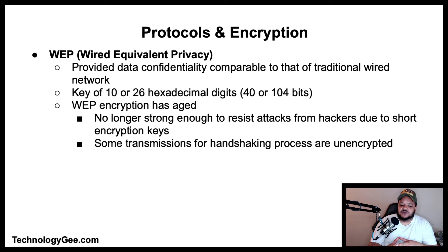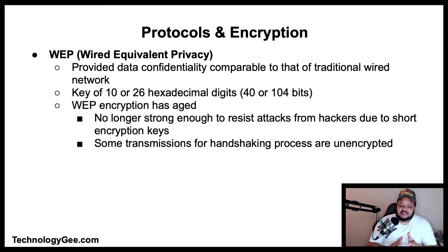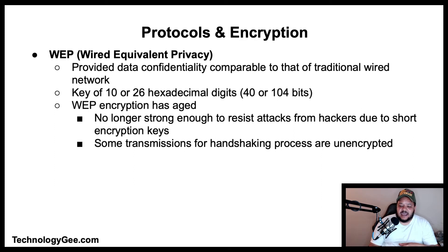The first wireless encryption standard is WEP, or Wired Equivalent Privacy. This is a security algorithm for the IEEE 802.11 wireless network. Its intention was to provide data confidentiality comparable to that of a traditional wired network. WEP is recognizable by its key of 10 or 26 hexadecimal characters.